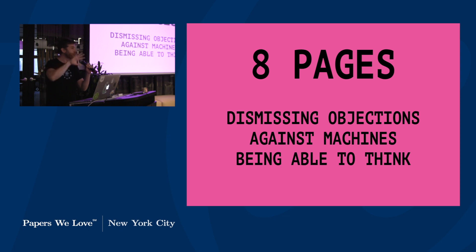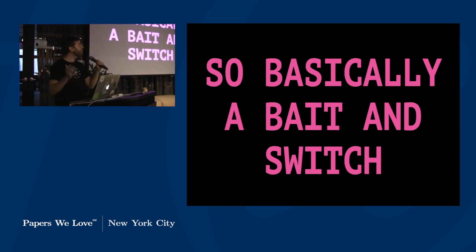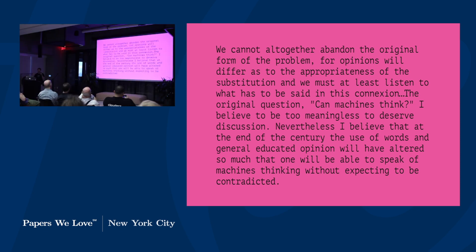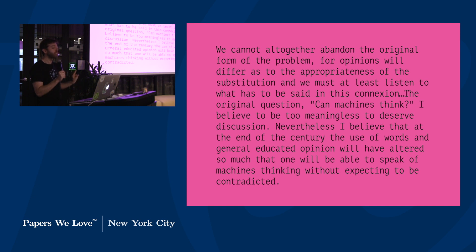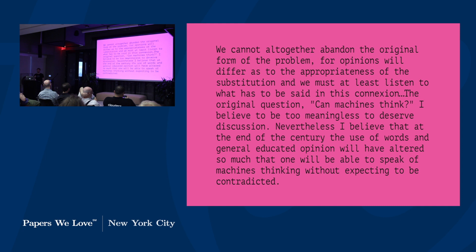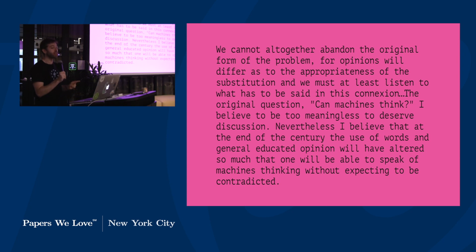He then, for eight pages, goes back to the original question and sets up straw man arguments dismissing why you would not think a machine can think. It's basically a bait-and-switch. He states: 'We cannot altogether abandon the original form of the problem... The original question, can machines think, I believe to be too meaningless to deserve discussion. Nevertheless, I believe that at the end of the century, one will be able to speak of machines thinking without expecting to be contradicted.' Basically, we're going to change how we feel about machines, but he still wants to bring up these objections.